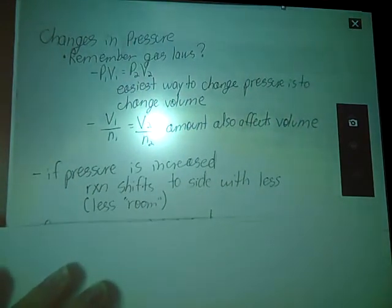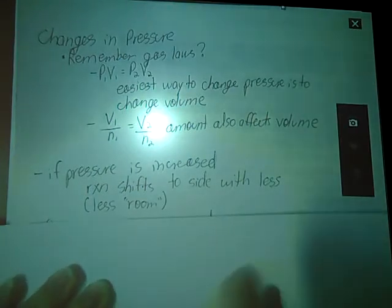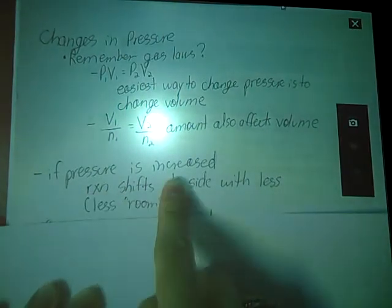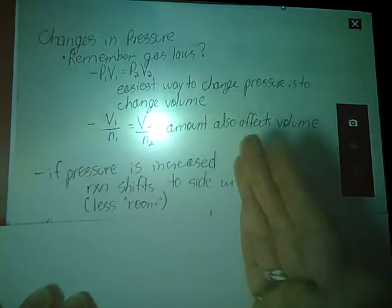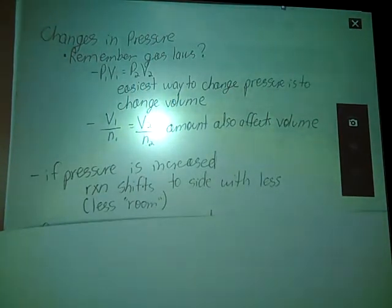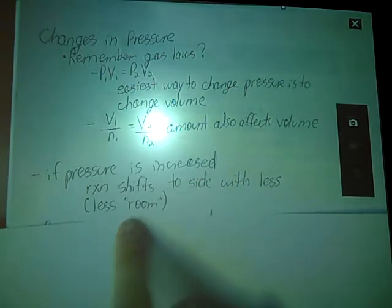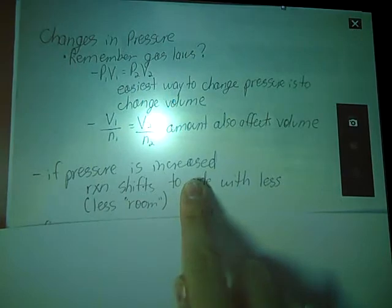So if my pressure is to increase, so let's say I decrease the volume of my box, or reaction vessel or container. If I increase my pressure, my reaction is going to shift to whichever side of my reaction, reactants or products, that has less. So look at the moles created. Moles in a reaction is indicated by our coefficients. So whichever side has a total of less moles, that's the direction my reaction is going to shift because we have less space, less room, if you will, because of that increased pressure.